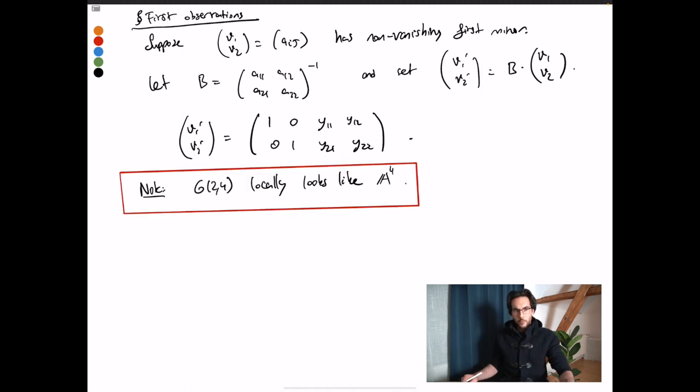Another thing we can observe from these affine coordinates is that we can recover W from its minors. Because now compute the minors using this new basis v1' v2' and you will see that y_ij's just simply appear as minors. Let's write this down.